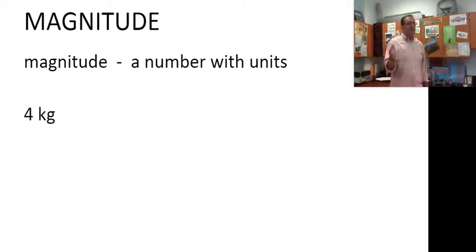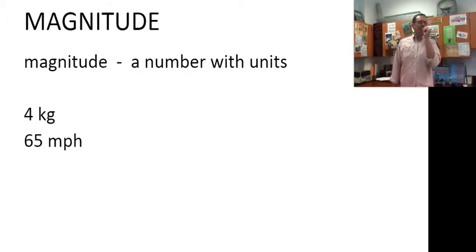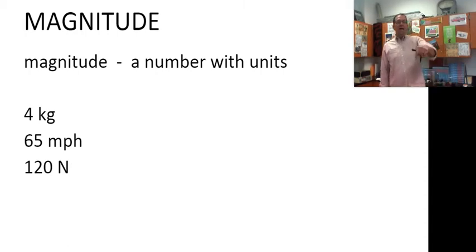Four kilograms. Four kilograms of mass. That's a magnitude. 65 miles per hour. 65 miles an hour north. Well, 65 miles an hour north. That's a velocity. But the magnitude of that velocity is 65 miles an hour, numbered with units. And 120 newtons down. That's a weight, perhaps.